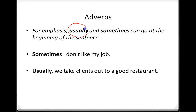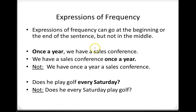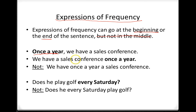One thing: the words 'usually' and 'sometimes' can go at the beginning of the sentence for emphasis. So you can say, 'Sometimes, I don't like my job.' 'Usually, we take clients out to a good restaurant.' So sometimes for emphasis, 'usually' and 'sometimes' can go at the beginning of the sentence — that is okay. With expressions of frequency, they can go at the beginning or the end, but not in the middle. 'Once a year, we have a sales conference' — or — 'We have a sales conference once a year.' Both are okay.